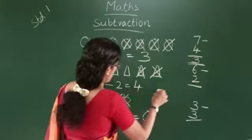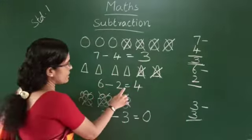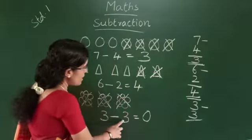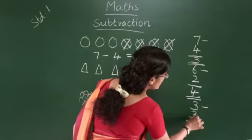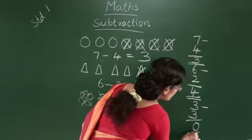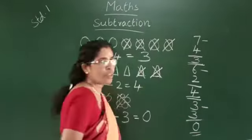6 minus 2 equals 4. This is the vertical type and this is the horizontal type. Now, 3 minus 3 is equal to 0. Ok?